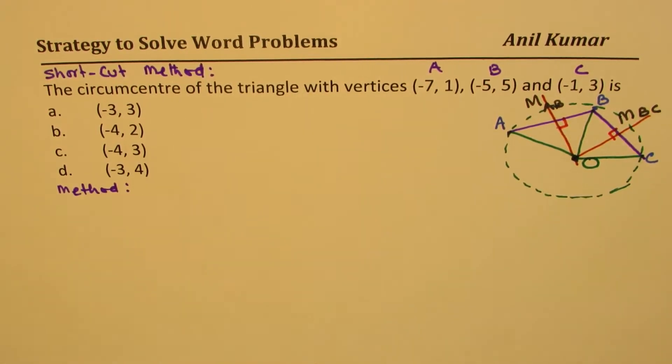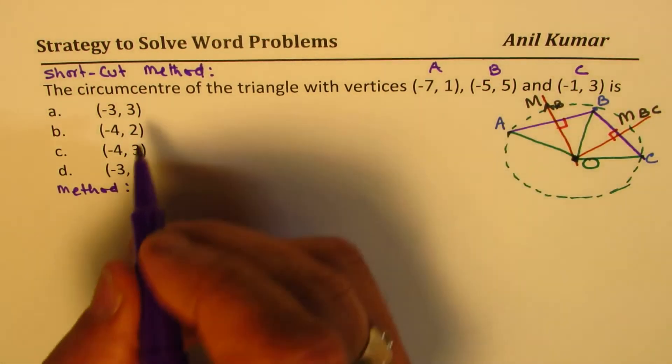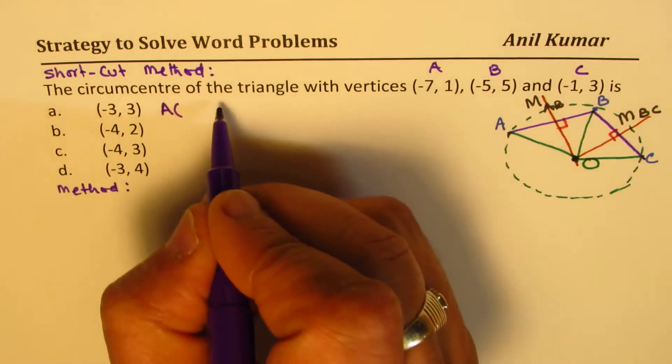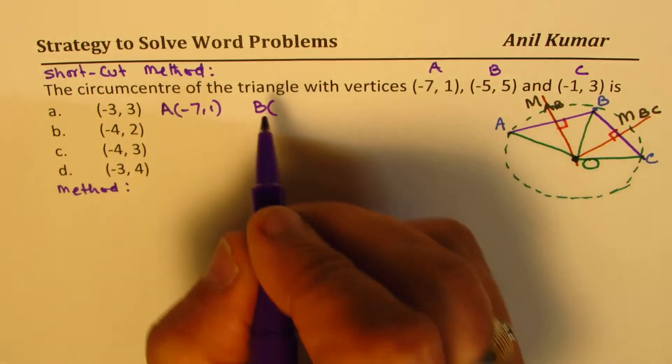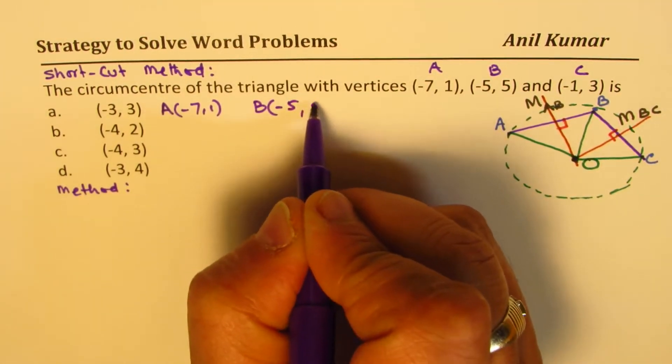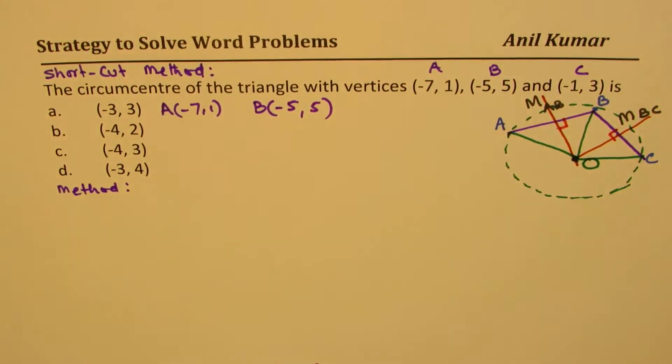So what is the midpoint M_AB? So first we'll begin with these two points, a and b. So we are given a, which is (-7,1), and we are given b, which is (-5,5).